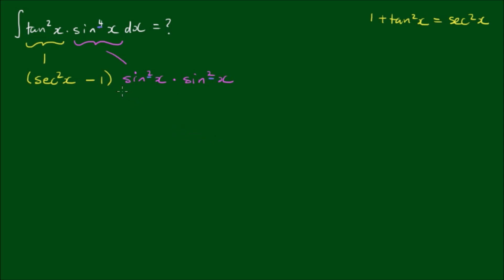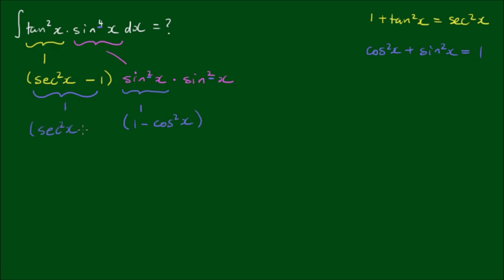This is simply reducing the power into the product of two square powers. For this sine squared term, let's use the other Pythagorean identity that cos squared of x plus sine squared of x equals 1, so I'm going to write this as 1 minus cos squared of x. Let's bring everything else down: sec squared of x minus 1, and this sine squared term.